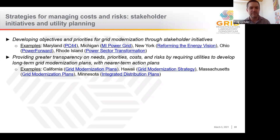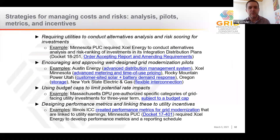The first state strategy example is developing objectives and priorities through stakeholder initiatives — big stakeholder processes meant to bring everybody on the same page about grid modernization goals. The second is giving greater transparency on needs, priorities, and costs by requiring utilities to develop both long-term grid modernization plans and near-term action plans. The third is requiring utilities to conduct alternatives analysis and risk scoring for investments. The fourth is encouraging and approving well-designed grid modernization pilots. The fifth is using budget caps to limit potential rate impacts in a general rate case cycle.